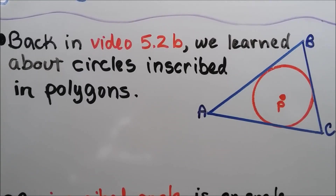Now back in video 5.2b, we learned about circles inscribed in polygons. So that red circle P is inscribed in that triangle ABC.